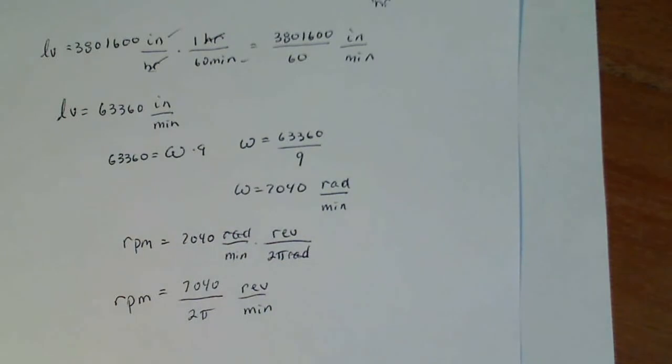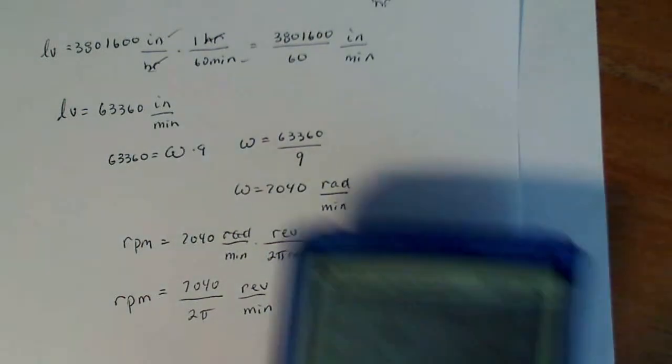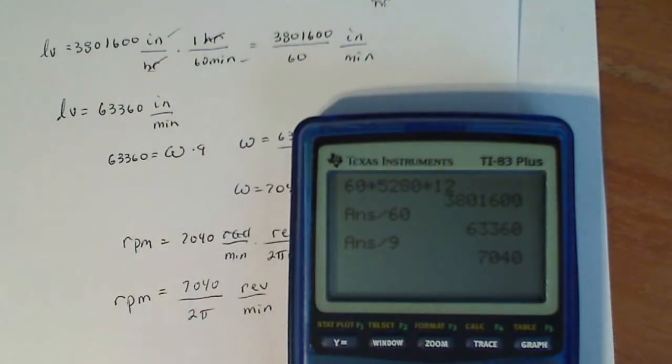You can leave it like that, but it's kind of ugly. So I'm just going to do an approximation, which all students love to do, and make sure you put your 2 and your π both in parentheses or it won't work right.